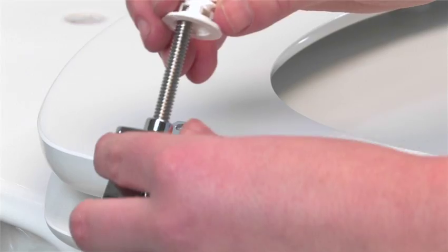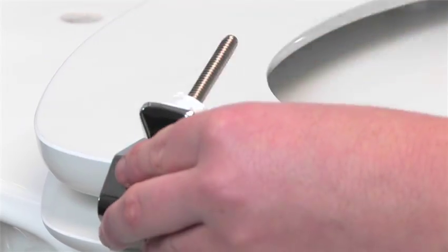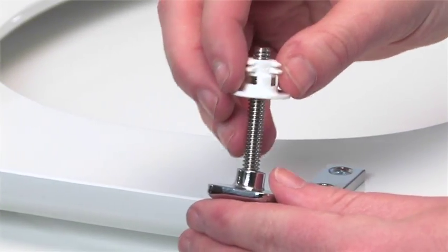Then, push the bushings onto the bolts. The wide part of the bushing should be inserted first, touching the hinge.